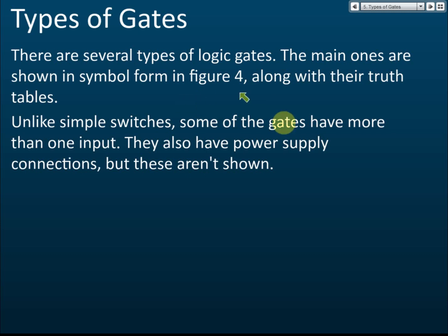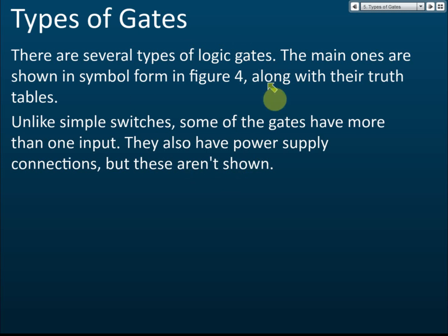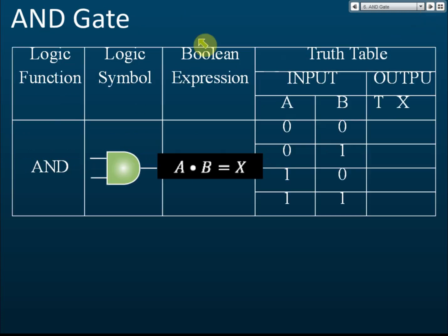There are a few types of logic gates you need to know. You need to know five: AND, OR, NOT, NAND, XOR, and XNOR. There's no more in the syllabus, but sometimes in objective questions you can still see them. Let's start with the first gate.